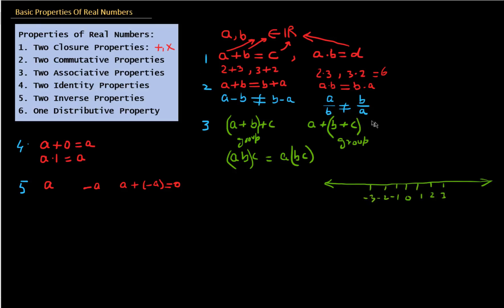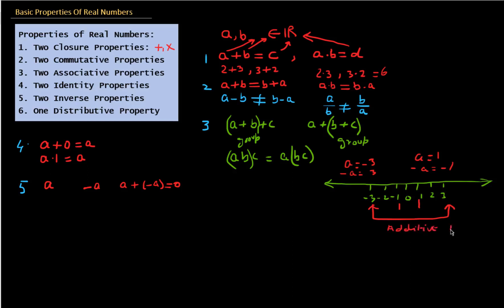So if A equals 1, then minus A will be minus 1. But if A equals minus 3, then minus A will be 3. These two numbers are additive inverses of each other. So for any number A, there is a number minus A such that if we add these two numbers, the result is 0.